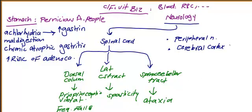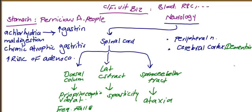Regarding the cerebral cortex, this manifests as dementia. In elderly people, vitamin B12 deficiency is one of the two important reversible causes of dementia, the other being hypothyroidism.